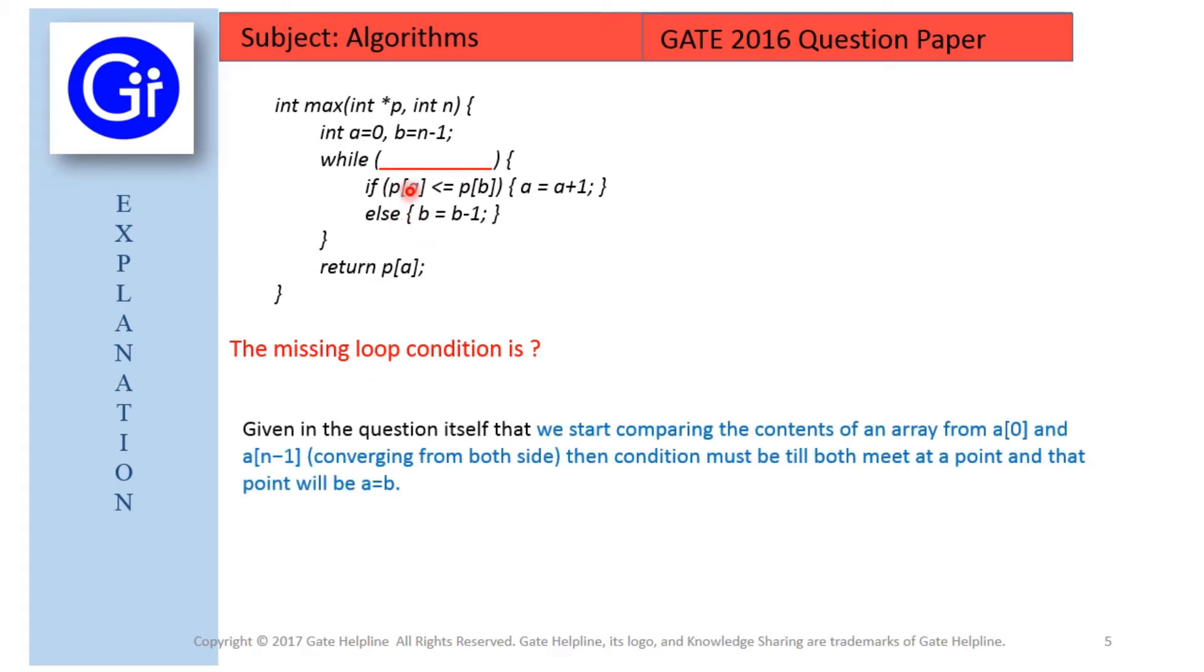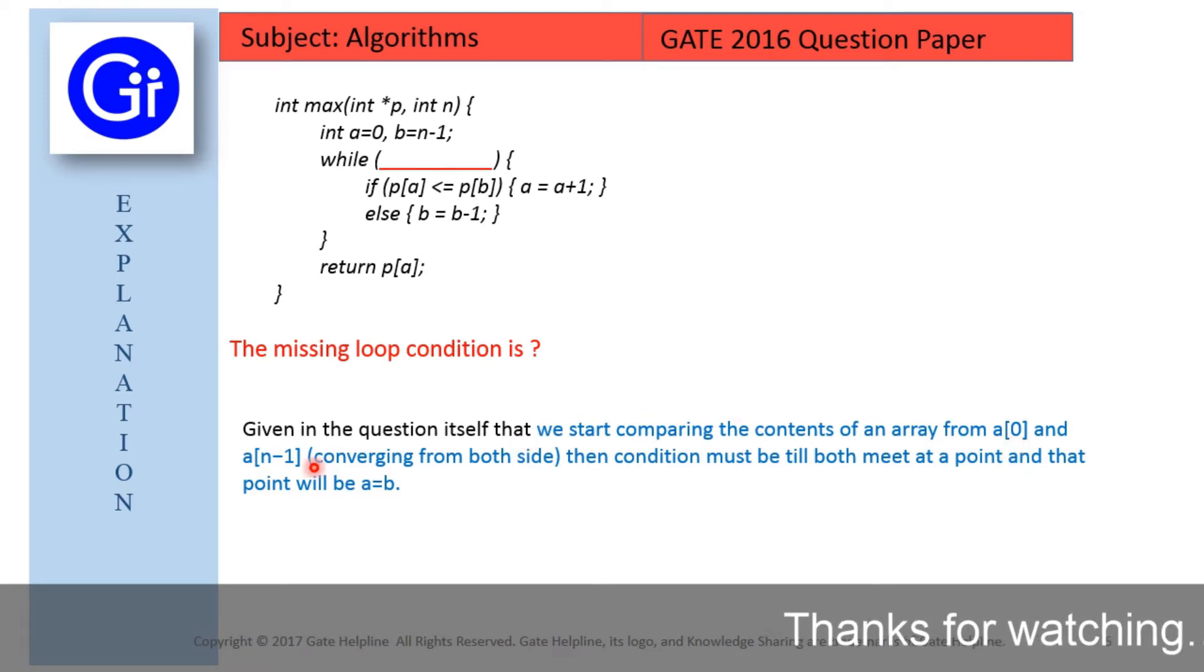As per checking the if condition inside the while loop, we can say that given in the question itself that we start comparing the content of an array from a equals to 0 and n minus 1, converging from both sides.